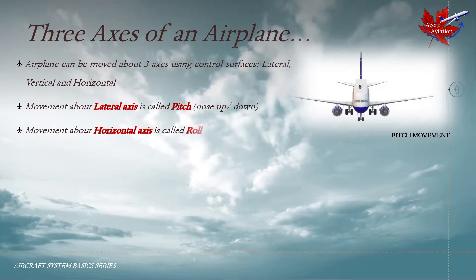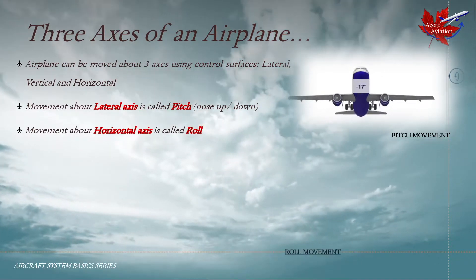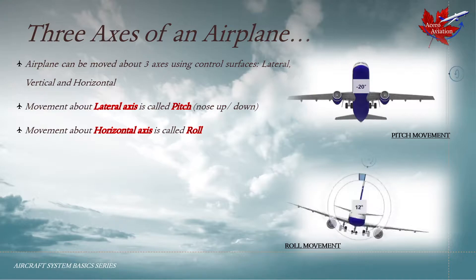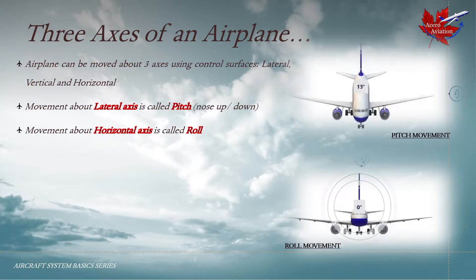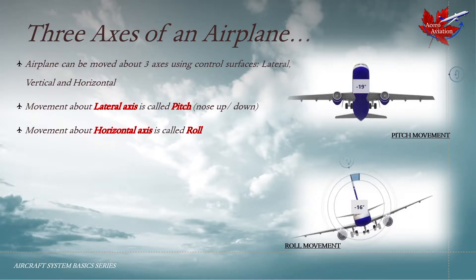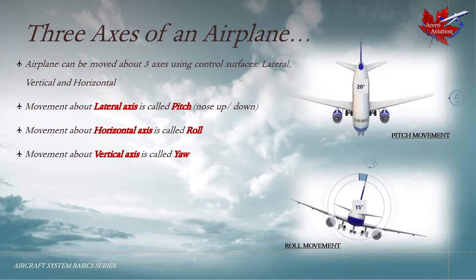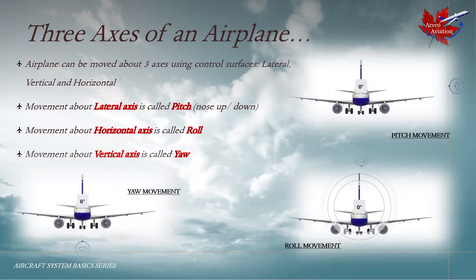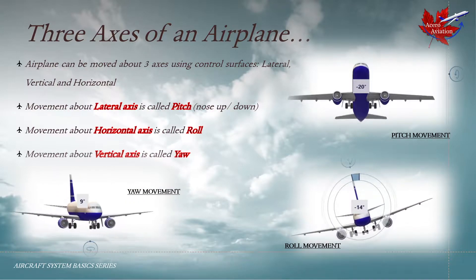Movement about the horizontal axis is called roll movement. This is what roll movement looks like. Movement about the vertical axis is called yaw movement, and here we have a depiction of yaw movement for the aircraft.